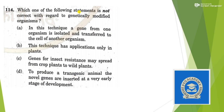Next: which one of the following statements is not correct with regard to genetically modified organisms? Statement one: in this technique, a gene from one organism is isolated and transferred to the cell of another organism — true. Statement two: this technique has applications only in plants — no, it has applications both in plants and animals. So we come to answer option B. The other statements — genes for insect resistance may spread from crop plant to wild plant, and to produce a transgenic animal novel genes are inserted at a very early stage of development — are both true.